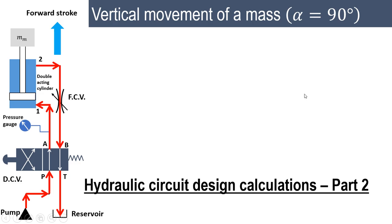In this video we'll try to understand how to design a hydraulic circuit in the case of a vertical double acting cylinder. It is the vertical movement of a mass. Since the mass moves vertically, the value of alpha, measured from the x-axis, will be 90 degrees. We need to understand what will happen in this particular case.